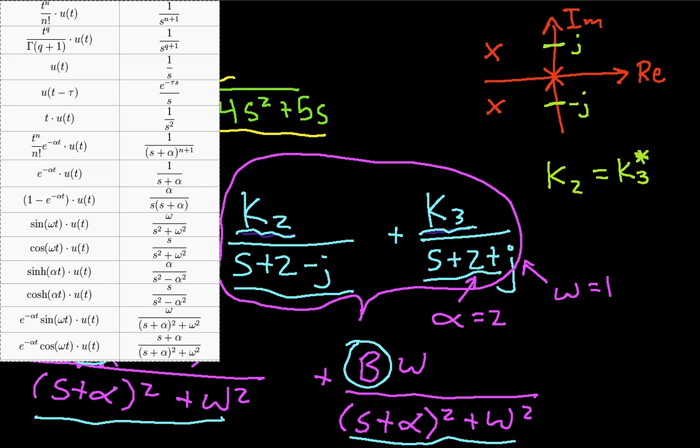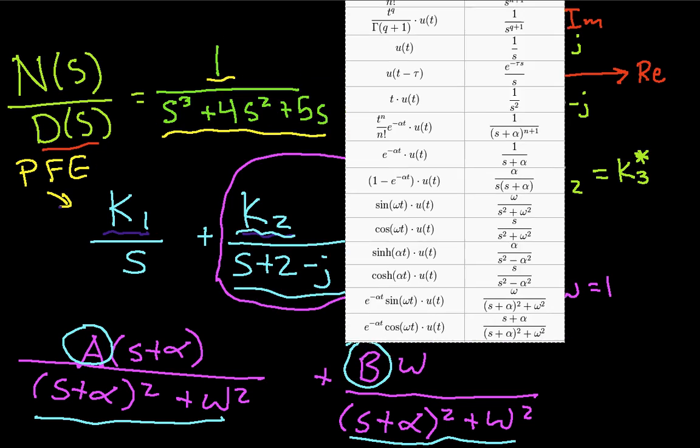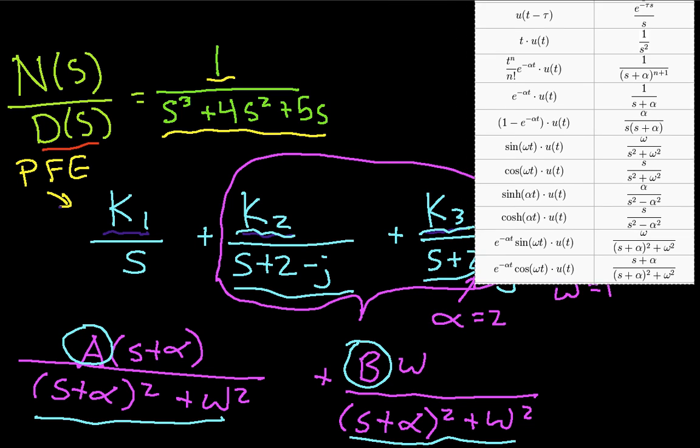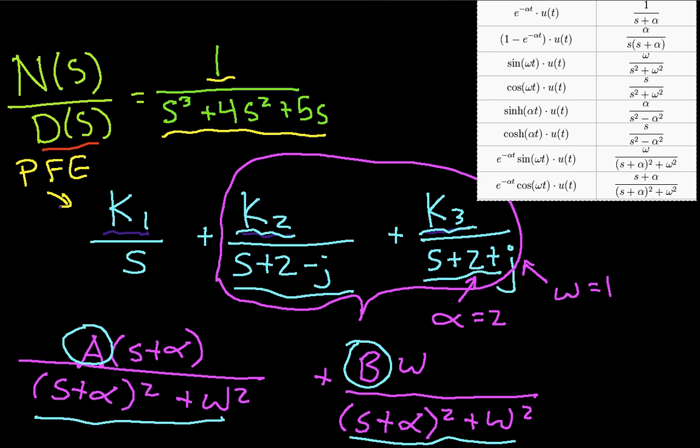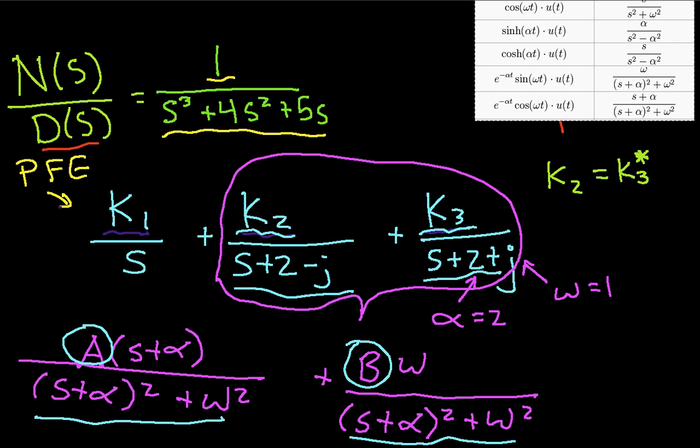If we look at our Laplace transform table again, you'll notice down here at the bottom that I have something that looks like s plus alpha over s plus alpha squared plus omega squared. And, strangely enough, that's what I have down here. I also have something that looks like this, which I also have down here.